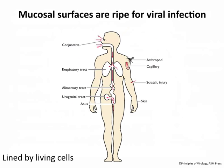Mucosal surfaces — respiratory, alimentary, etc. — are beautiful sites for viral entry because they have to be permeable; otherwise we don't live. Viruses can get in and out of them very readily since they're lined by living cells and are wet. The respiratory tract is a major portal of entry.